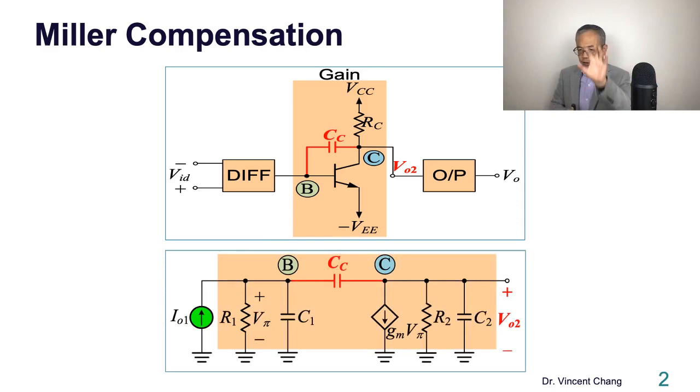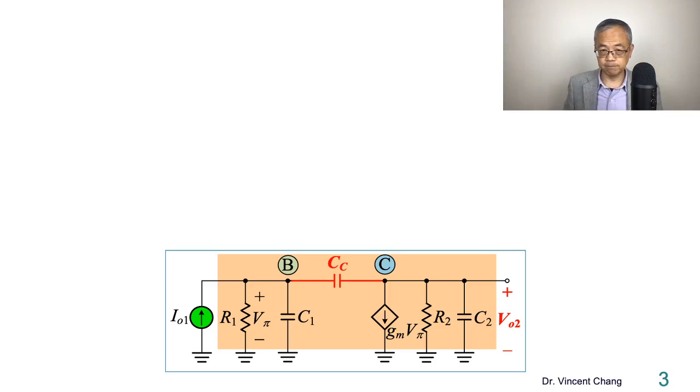For the gain stage at the input side, you see the total resistance and capacitance are R1 and C1 respectively. And the total capacitance and resistance at the output side of the gain stage are C2 and R2. The CC is connected between the base and collector of the bipolar junction transistor. The Gm represents the transconductance. So how to solve this? What's the question? To harness Miller compensation.